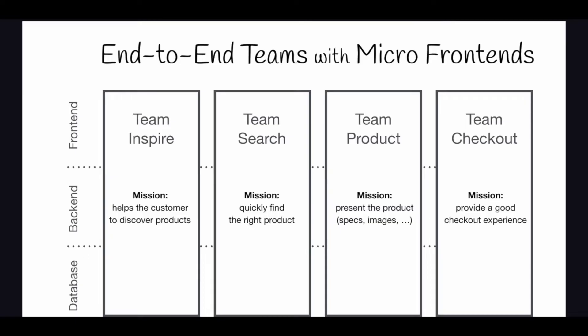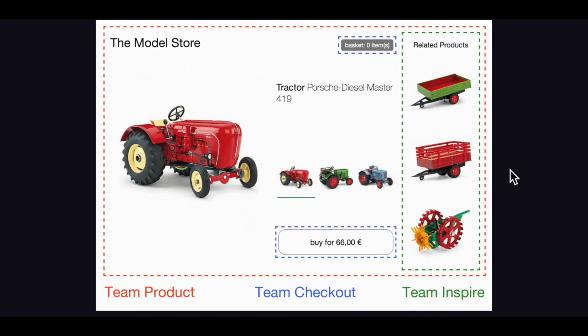For example, we can have team checkout, team product, and team search — each with a different mission. The product team's goal is to present products. On a webpage, team product handles the entire product display page, team checkout handles the basket and buy button for purchasing, and team inspire displays product recommendations. Microfrontend architecture divides responsibility into multiple parts on the browser, each with its own codebase and responsibility.